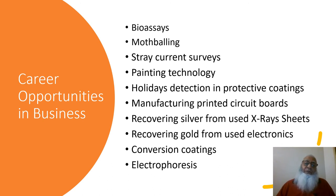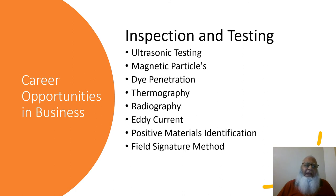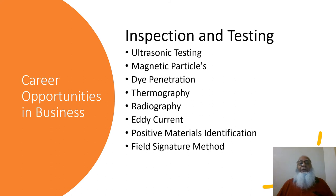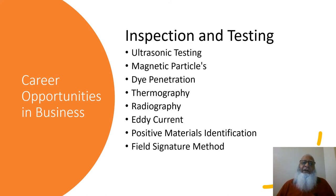The corrosion engineer has to be clever and intelligent with a high degree of talent to have their own business as a career. These slides add further opportunities in inspection and testing: ultrasonic testing, magnetic particle, dye penetration, thermography, radiography, eddy current, positive material identification, and field signature methods. These techniques may not be taught as part of a corrosion engineering degree, but the corrosion engineer must take extra specialized courses at institutions or training centers to expand their career as an independent business in these testing and inspection fields.